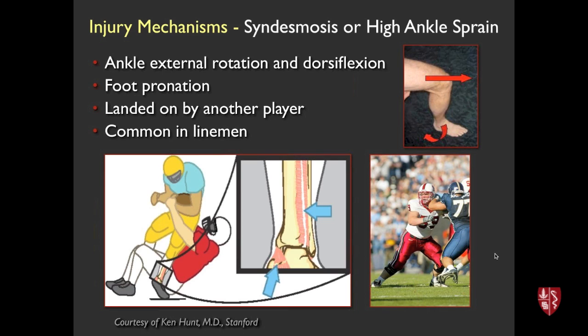As opposed to a typical lateral ligament ankle sprain, the high ankle sprain is higher up in the ankle and is less common than the traditional lateral ligament sprain. The mechanisms of injury include a patient having his or her foot planted on the ground and externally rotating or pronating the foot. In sports, it often occurs when an athlete is landed on by another player.